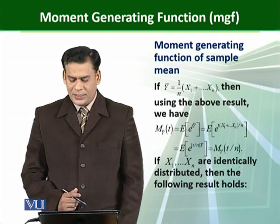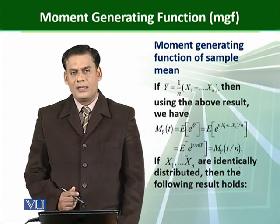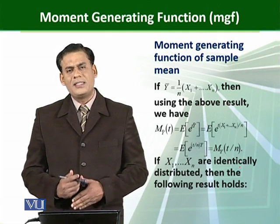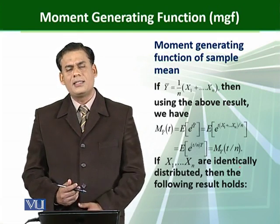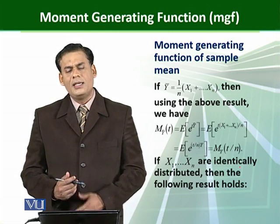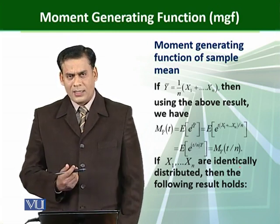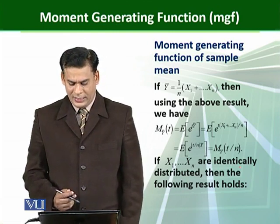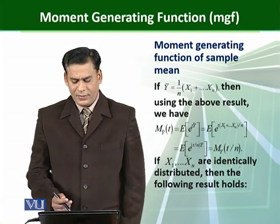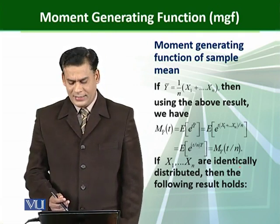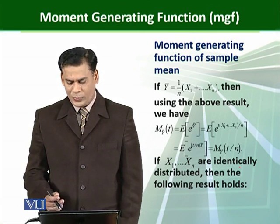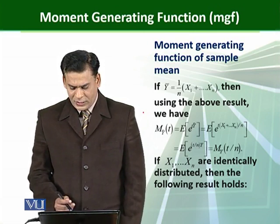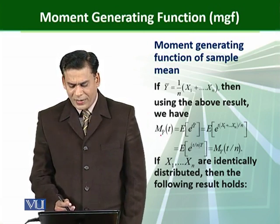Further, the moment generating function of a sample mean — because we are studying the sample statistic and we frequently use the mean — so if we have a moment generating function of a sample mean, that is M_Ybar(t). Let Y-bar equal to (1/n)(X1 + ... + Xn). Then using the previous moment generating function result, that is M_Ybar(t)...